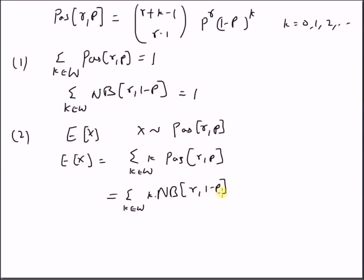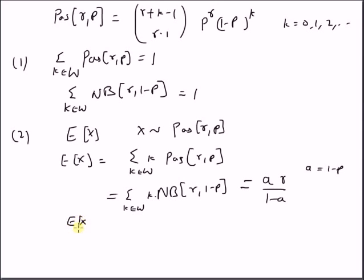We know that the mean of a negative binomial distribution with parameters r and a is equal to a times r divided by (1 - a), where a equals 1 minus p. Therefore, the expectation or mean of the Pascal distribution is equal to (1 - p) times r divided by p.